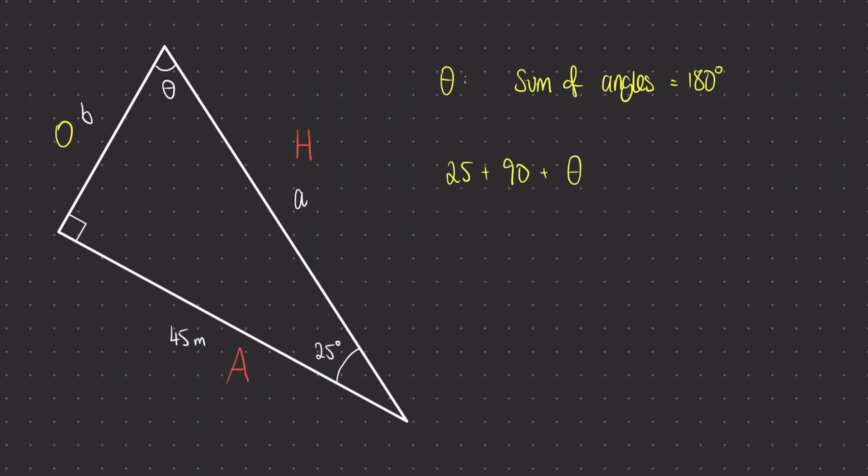And the unknown one theta are going to sum together to be 180 degrees. Subtracting 25 from both sides and then subtracting 90 from both sides, we find that our answer theta is 65 degrees.